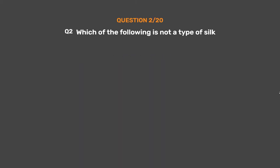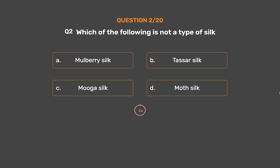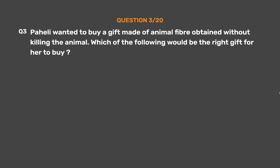Question No. 2. Which of the following is not a type of silk? Option A: Mulberry silk, Option B: Tassar silk, Option C: Moonga silk, Option D: Moth silk. The correct answer is Option D: Moth silk. Moth is the silkworm under development inside a cocoon. Mulberry, Tassar, and Moonga are varieties of silk produced by different rearing practices.